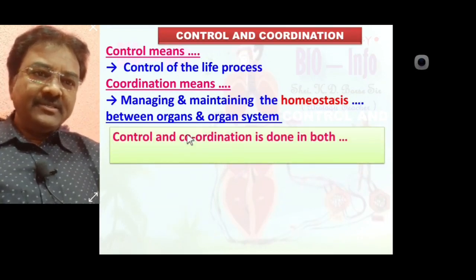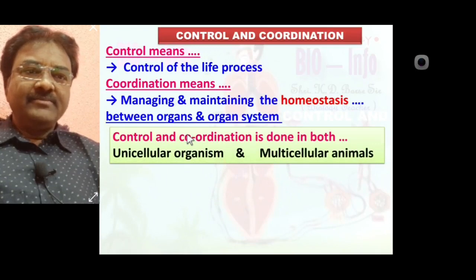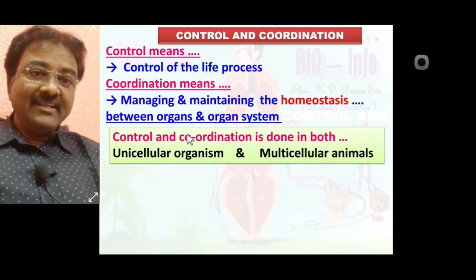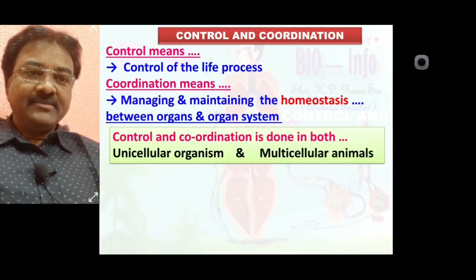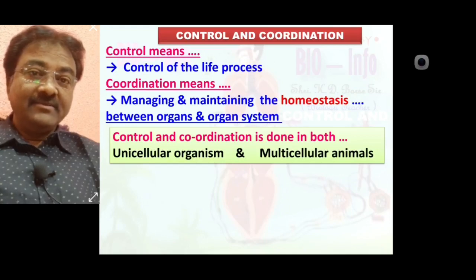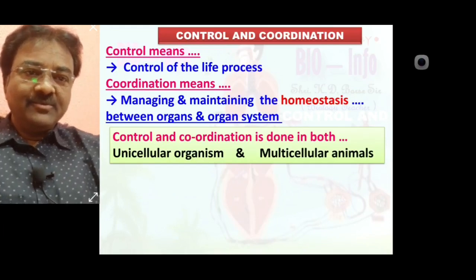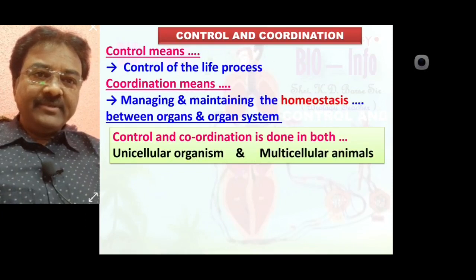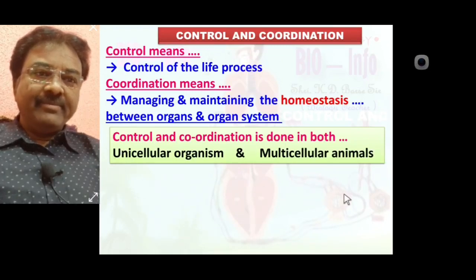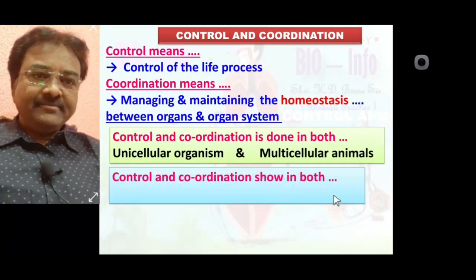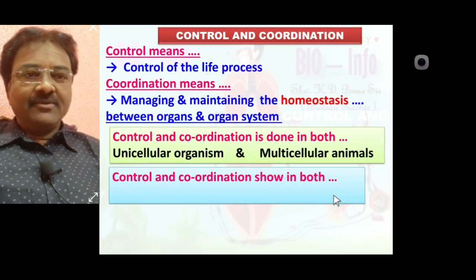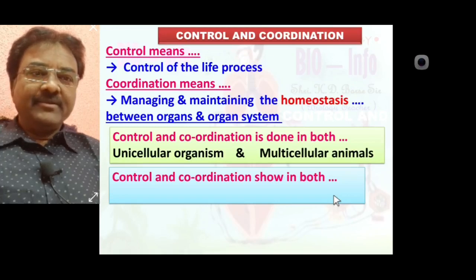Control and coordination occurs in both unicellular organisms as well as multicellular organisms. Unicellular organisms consist of only a single cell, while multicellular organisms are more complex because various organs and organ systems are present. So control and coordination in unicellular organisms is very simple, but in multicellular organisms it is very complex.